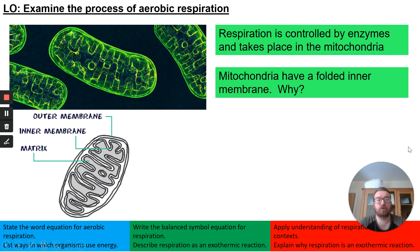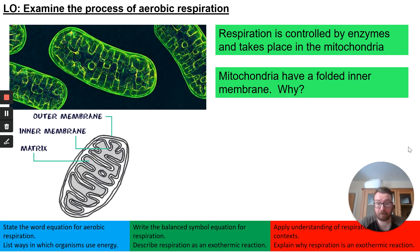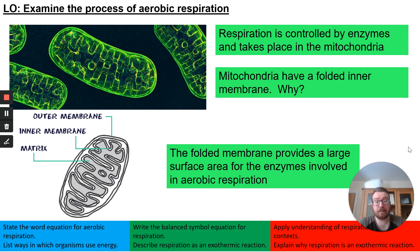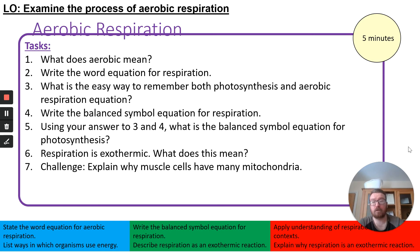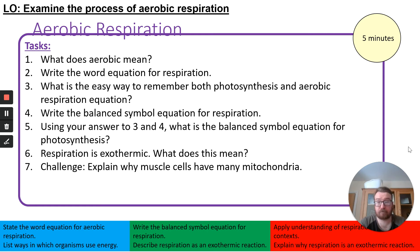Respiration is controlled by enzymes and takes place in the mitochondria. Mitochondria have a folded inner membrane. This is one of those really common adaptations — a lot of cells have it. It is to provide a large surface area. Other cells with this adaptation include red blood cells, root hair cells, and the alveoli in the lungs, which also provide a large surface area. There are seven questions here — I'd like you to pause the video and work through them now, please. Thank you.